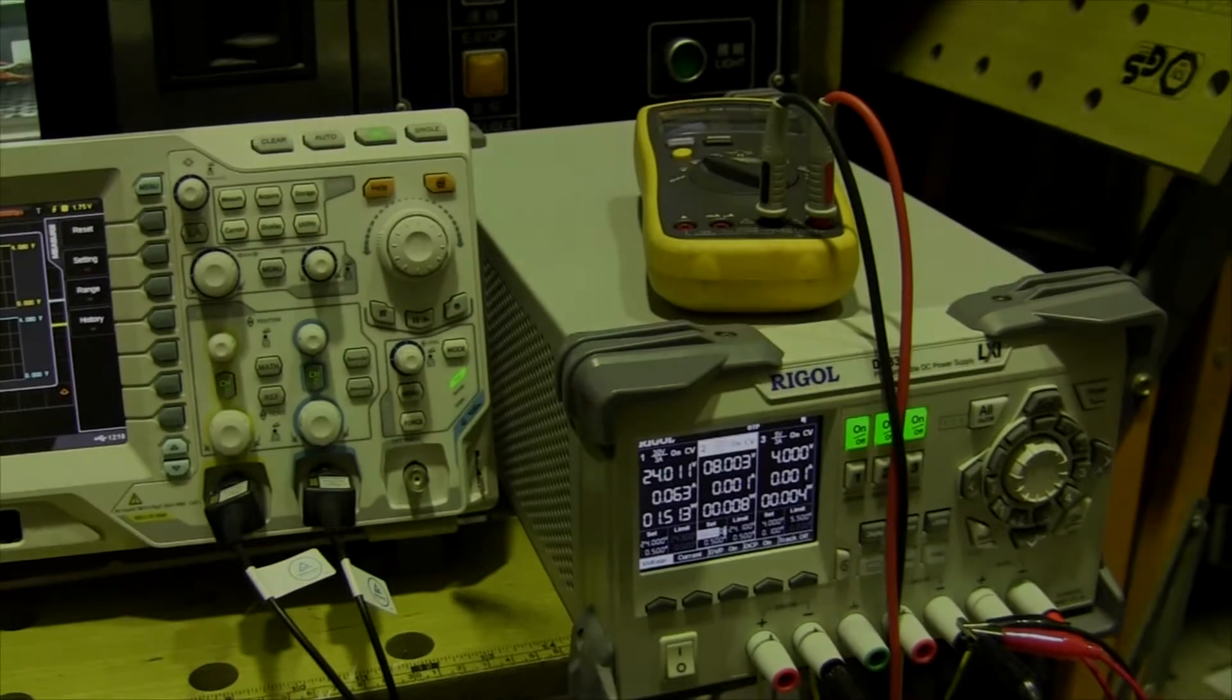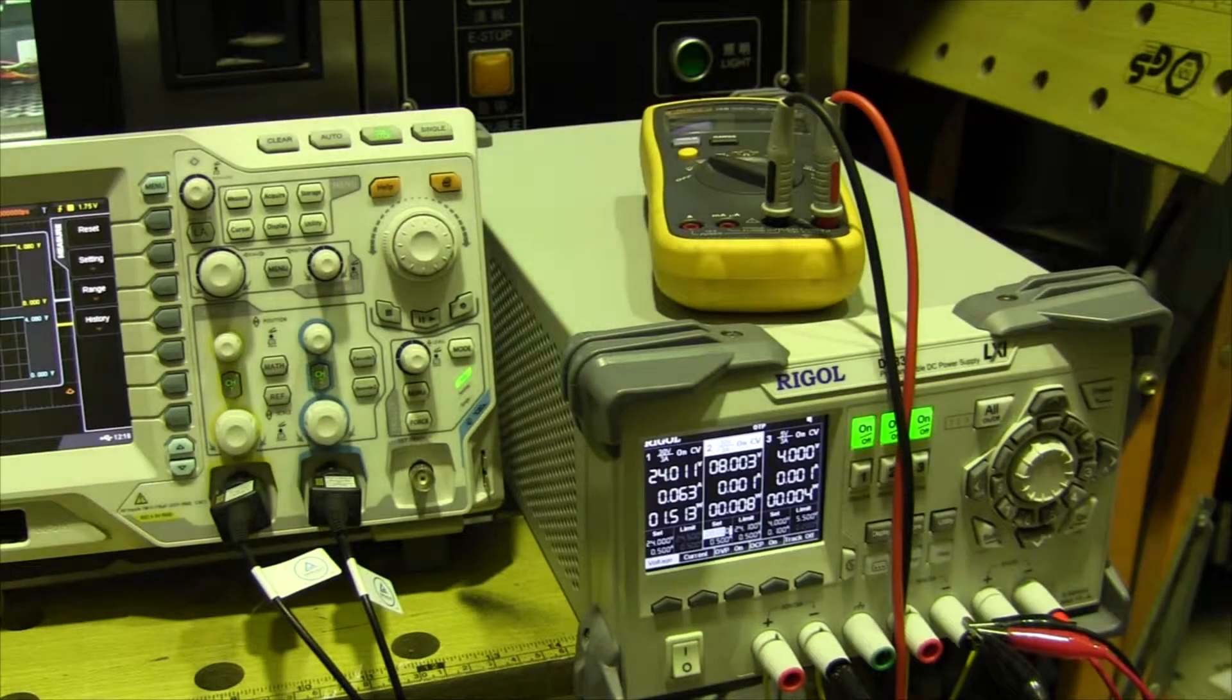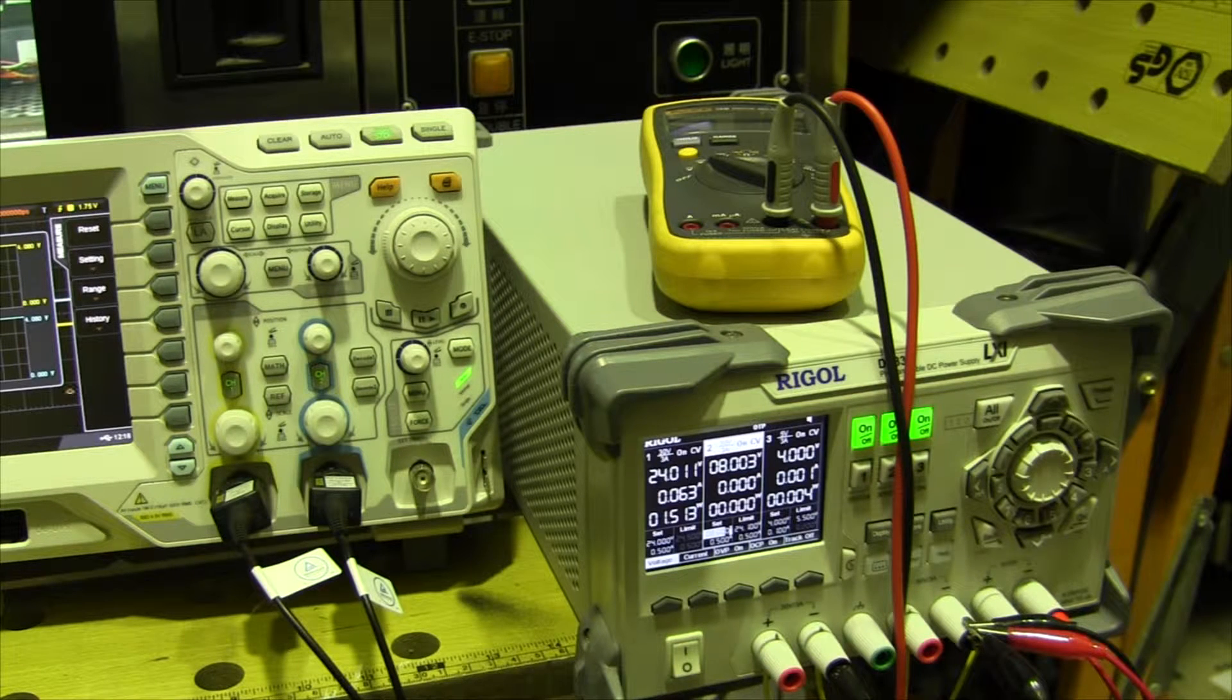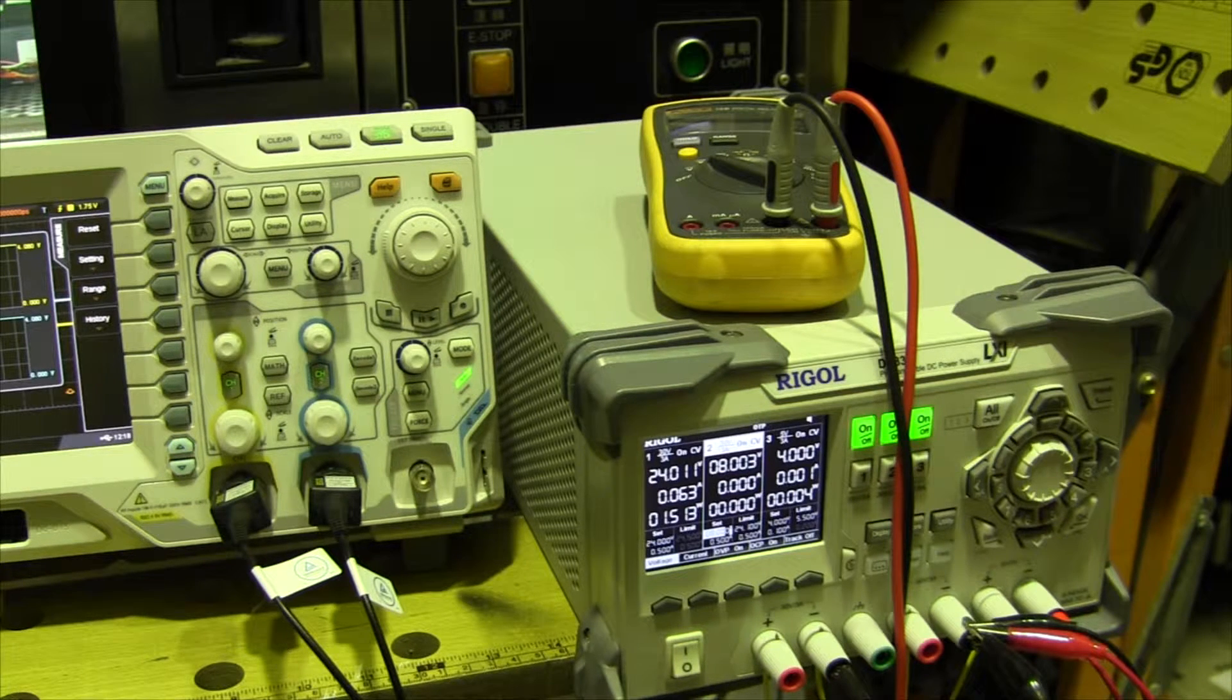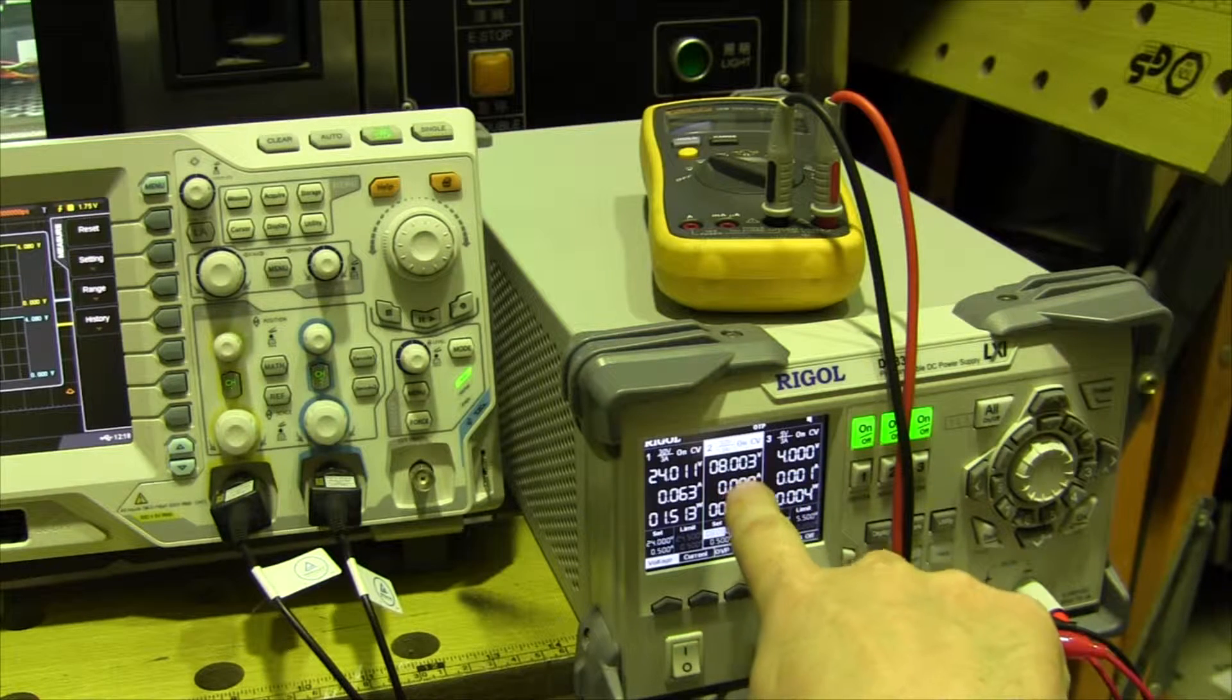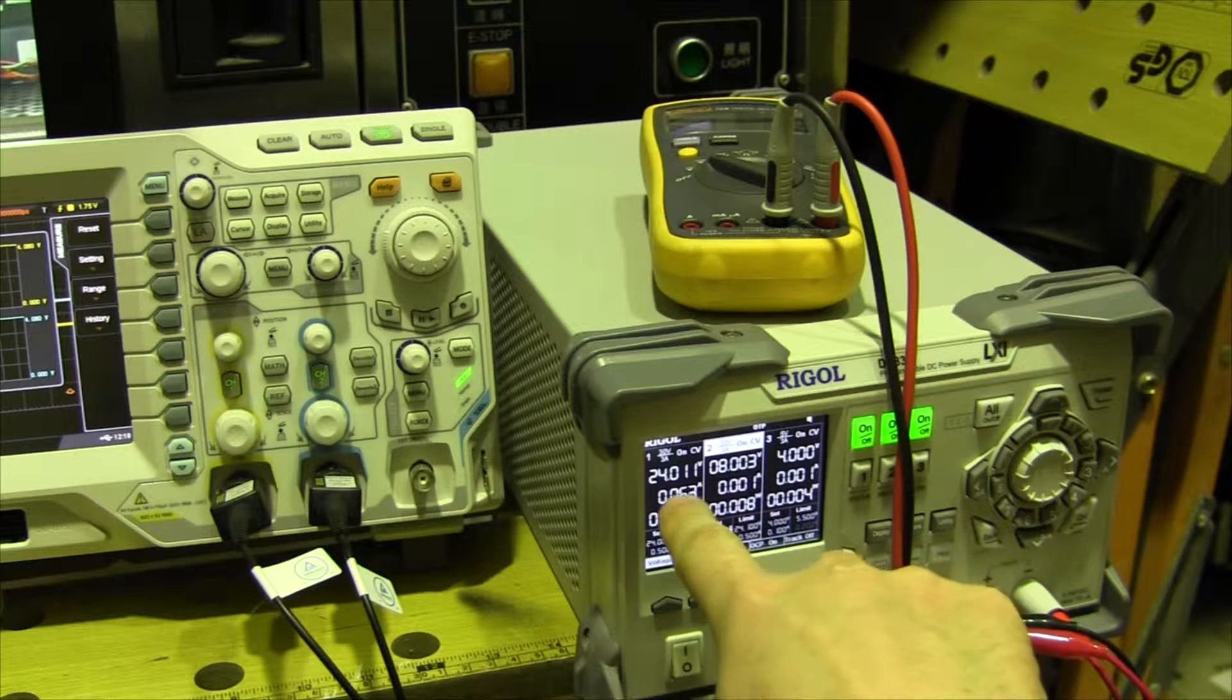Okay, so what we've done is set up a power supply with the required simulation for the RA2. So we've got a 4 volt, an 8 volt reference and a 24 volt supply.